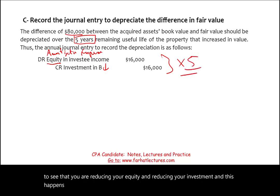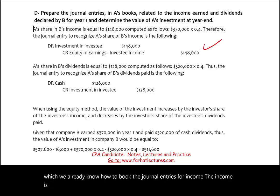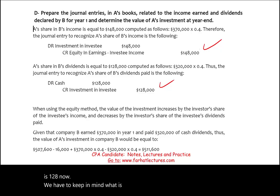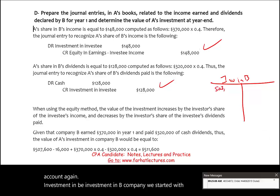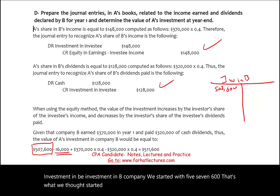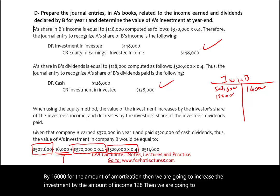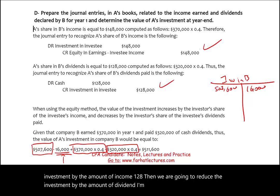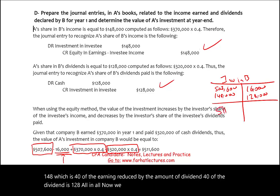Booking all journal entries for year one: income entry — debit Investment $148,000, credit Equity in Earnings $148,000; dividend entry — debit Cash $128,000, credit Investment $128,000; amortization entry — debit Equity in Investee Income $16,000, credit Investment $16,000. T-account for Investment in Company B: starting balance $507,600, plus income $148,000, minus dividend $128,000, minus amortization $16,000 = ending balance of $511,600.